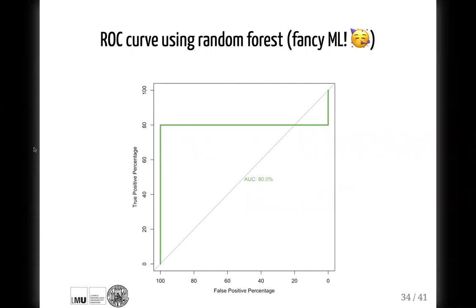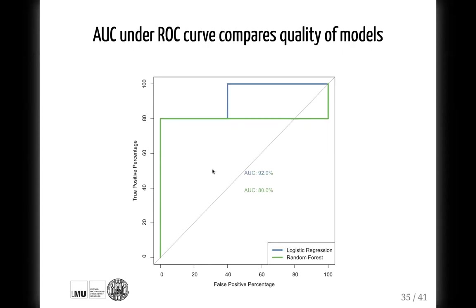As you have seen, logistic regression is a useful classification model, and of course there are other classification models out there. One of the most famous is the random forest algorithm. I applied the random forest algorithm to our data — changing probability thresholds, making different predictions, producing different confusion matrices — and summarized all of them in this ROC curve. We see that the random forest algorithm gives us a lower area under the curve than logistic regression, which demonstrates one of the most useful features of ROC curves: they allow you to compare several models.